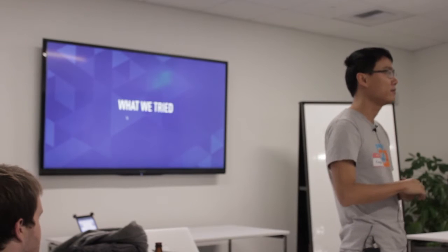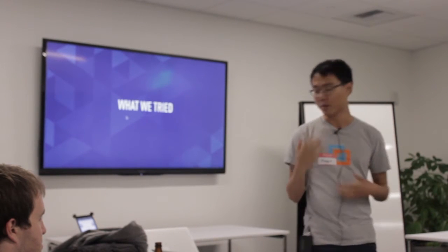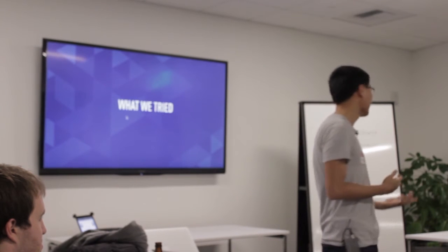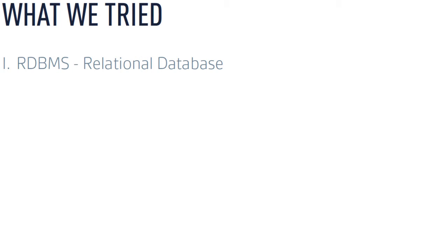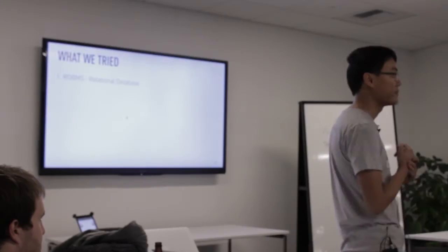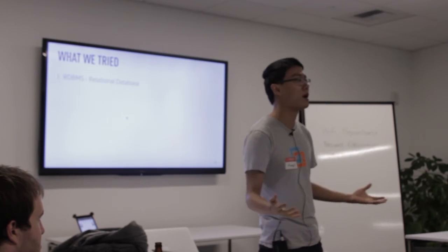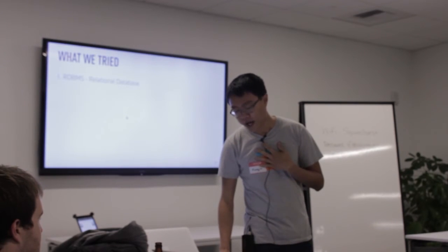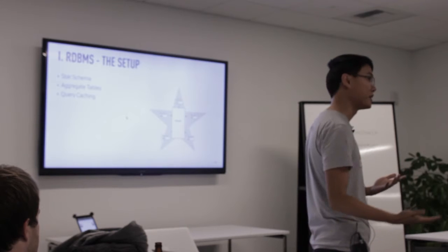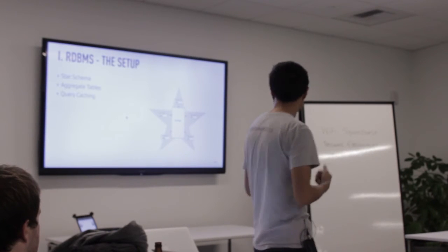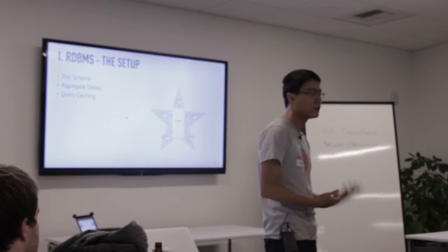Metamarkets was founded around mid-2010. We knew early on that we wanted to build a dashboard for clients to explore data, but we didn't know what data engine to use. In the early days, we tried several different solutions. One of the first was a relational database management system. We ended up trying Postgres, using a pretty common data warehousing setup: a star schema with a fact table in the center, dimension tables on the side, aggregate tables, and query caches to try to improve query latency.